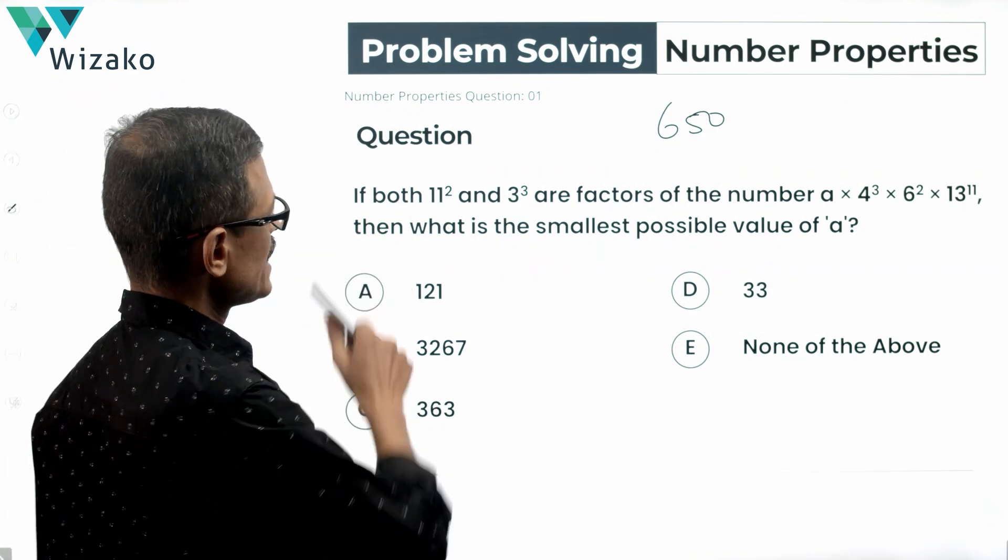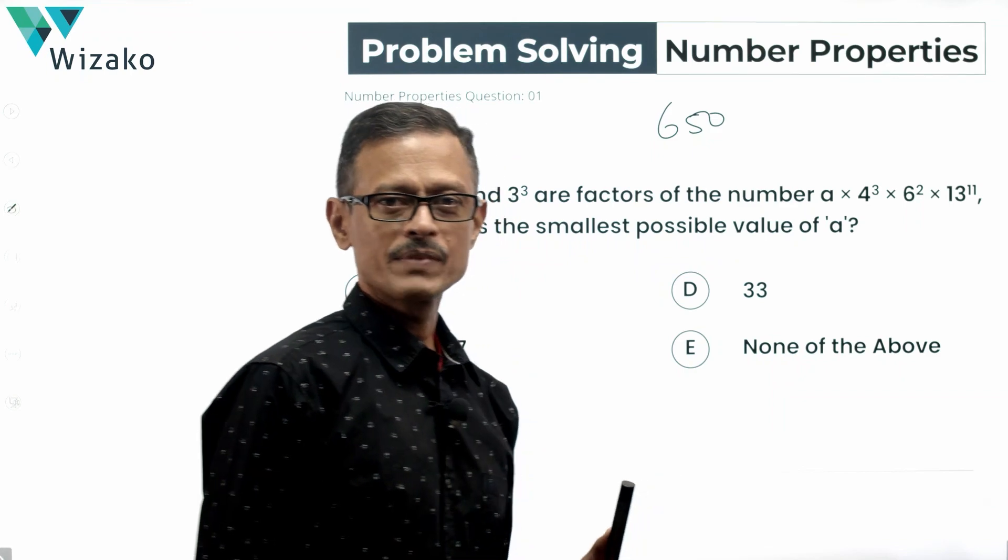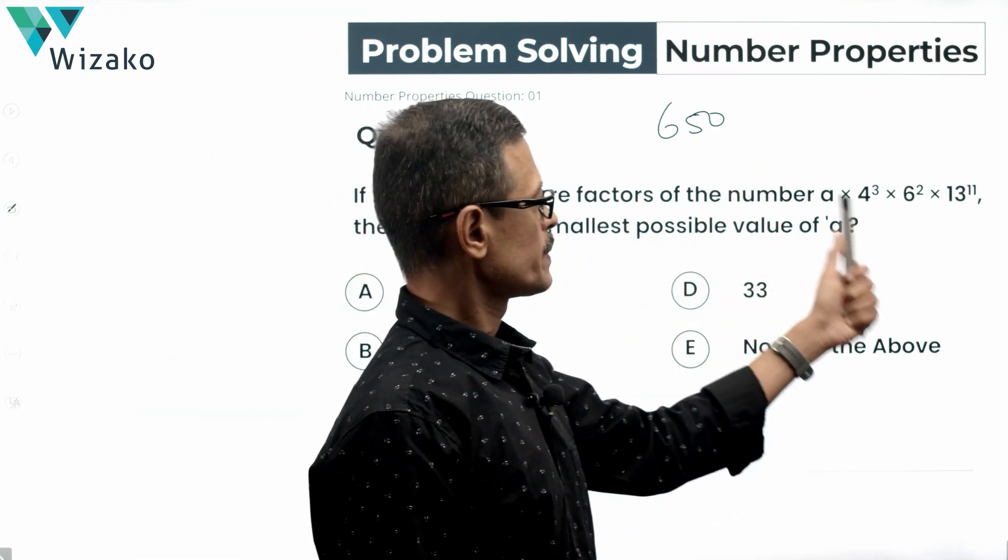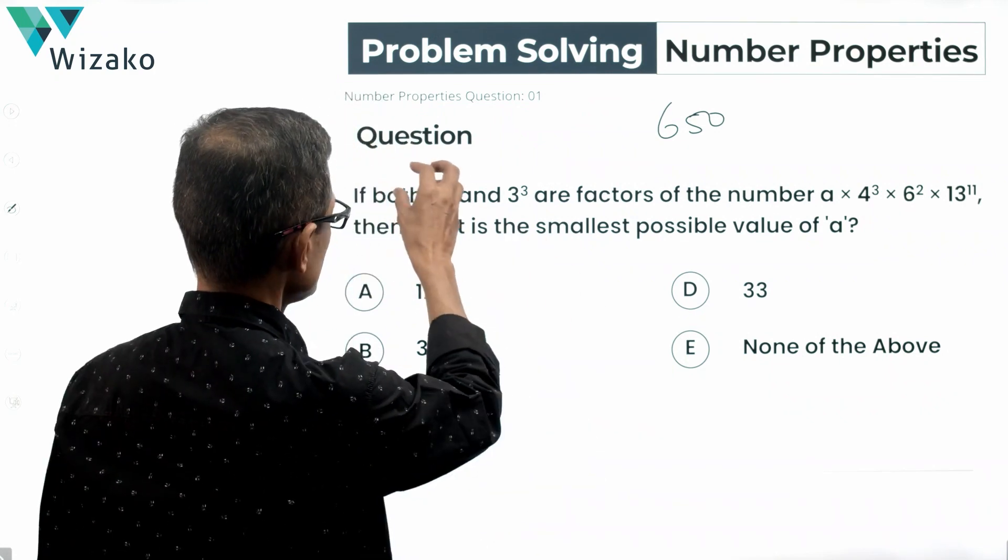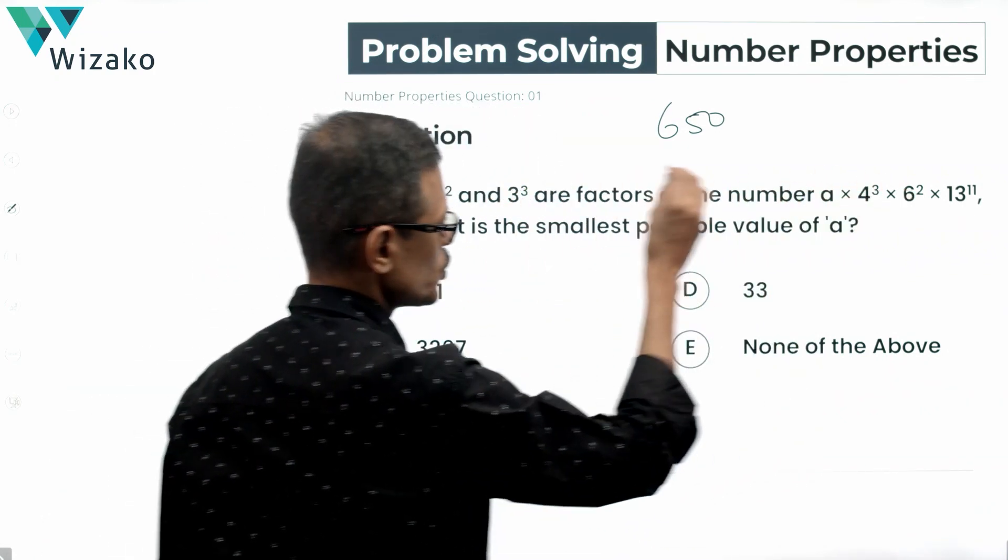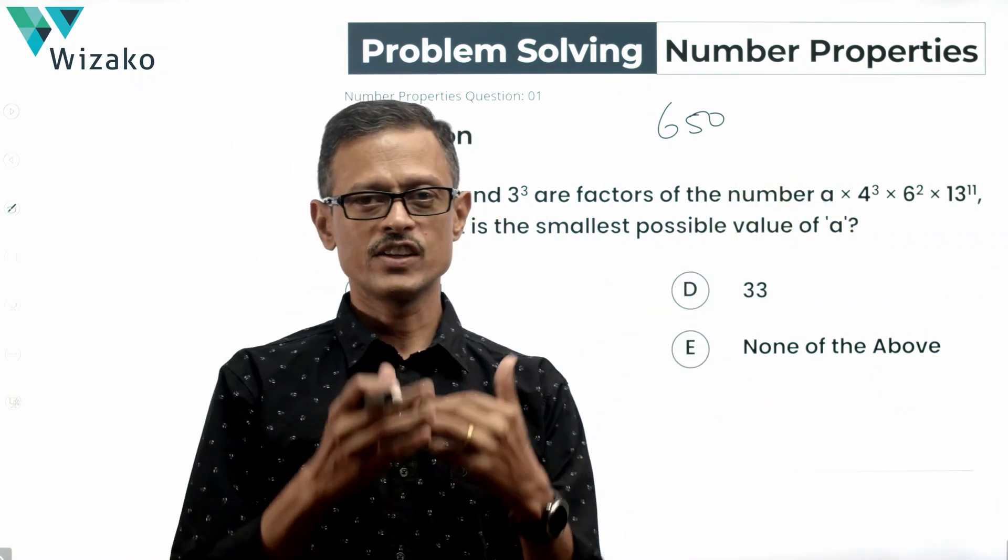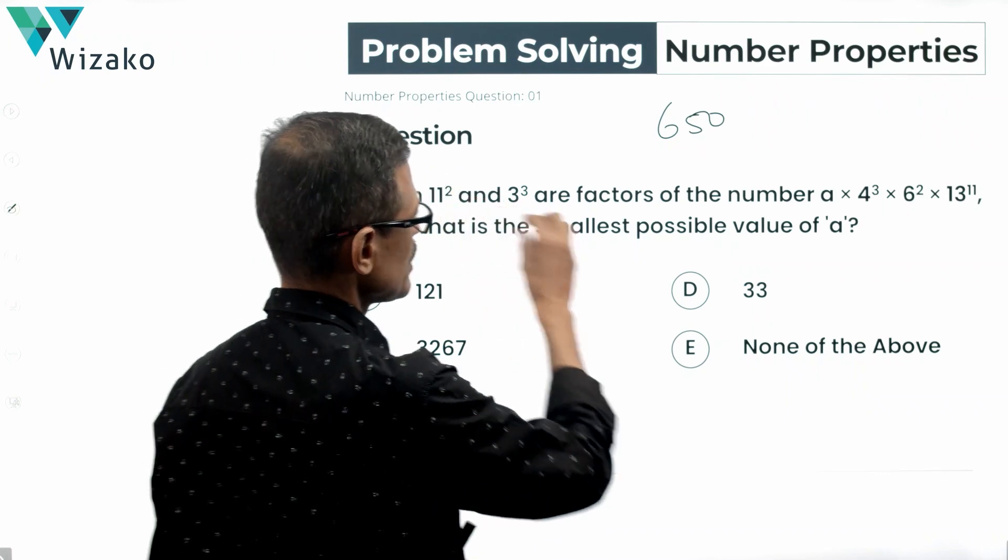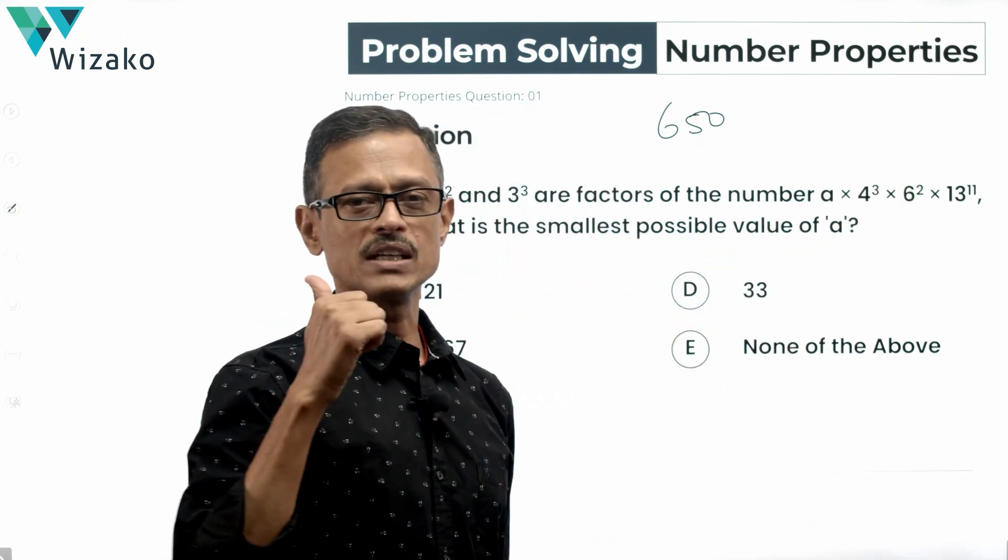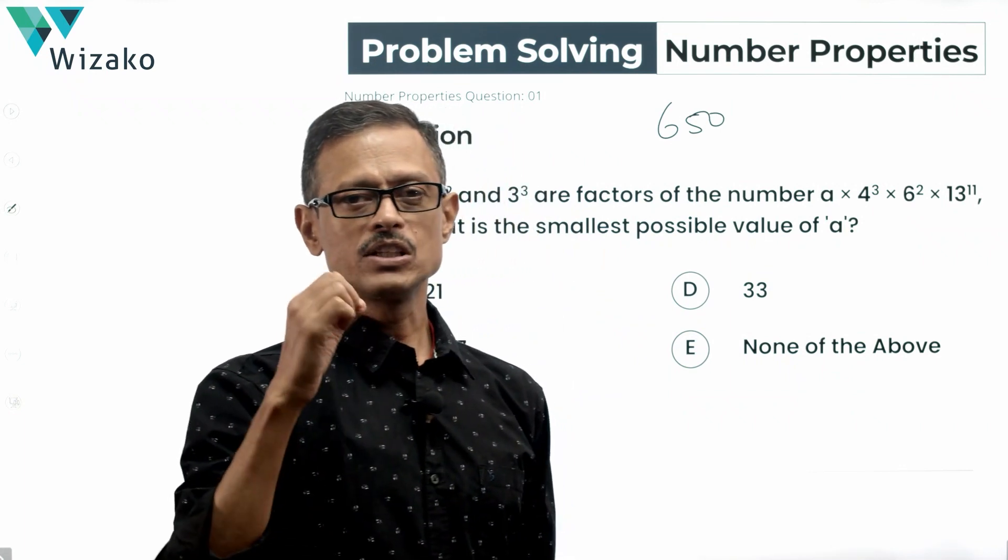If both 11 square and 3 cube are factors of this number, A times 4 cube times 6 square times 13 raised to the power of 11, then what is the smallest possible value of A? Essentially what they're saying is 11 square will be able to divide this number without leaving any remainder. So will 3 cube be able to divide this number without leaving any remainder.